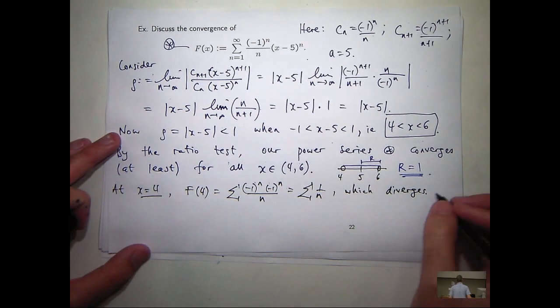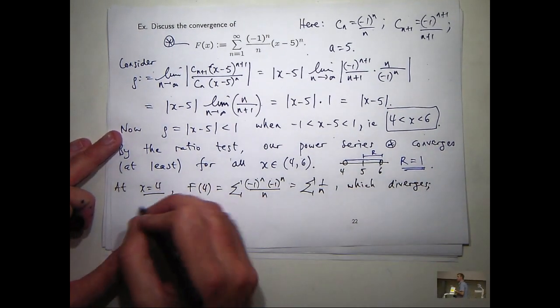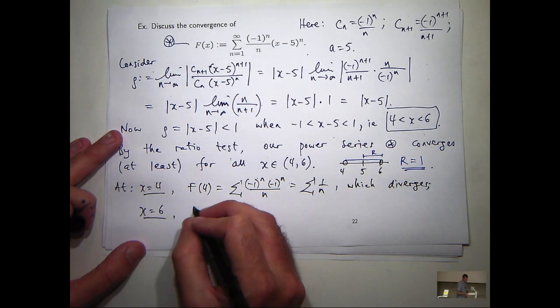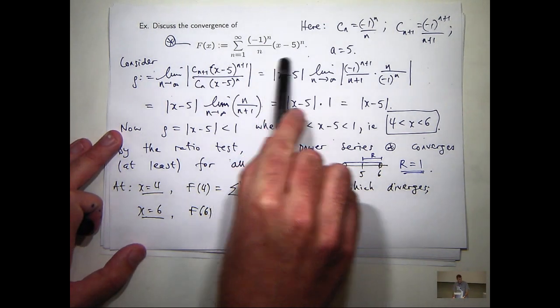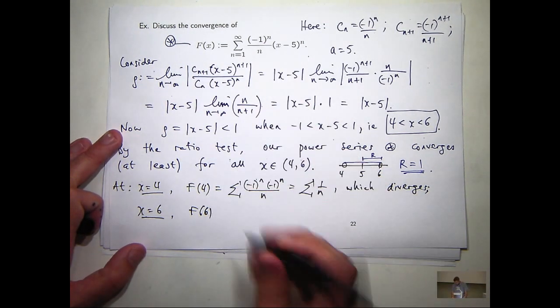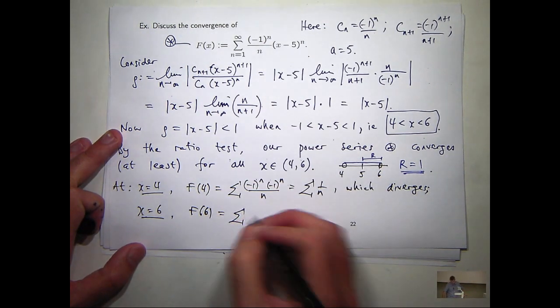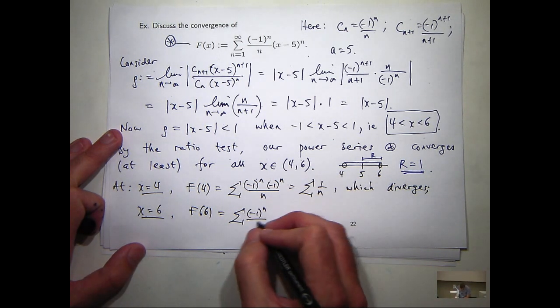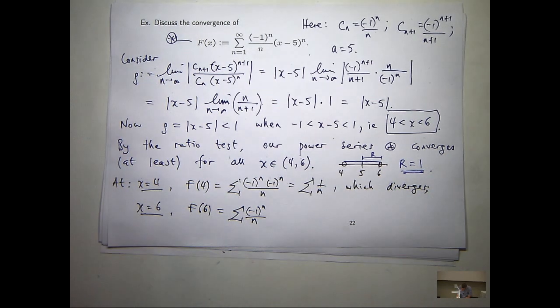What about at x equals 6? So, go up here. Plug in x equals 6. And I'm going to get something like this. Times 1 to the n, which is just 1. What about this series down here on the bottom? It's an alternating series. Does it converge or diverge? It converges, right? This is an alternating series that converges. Leibniz test.